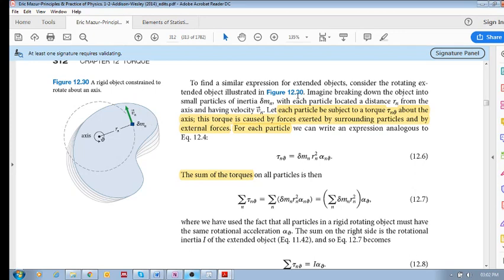We choose a point of rotation, we choose the direction of rotation that is positive, and then we also have the radius for each of these particles on the object. Let each particle be subject to a torque about this axis, and this torque is caused